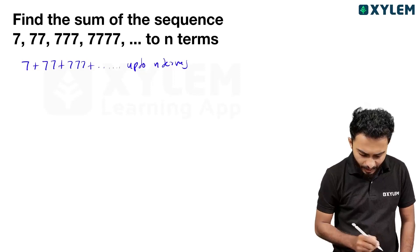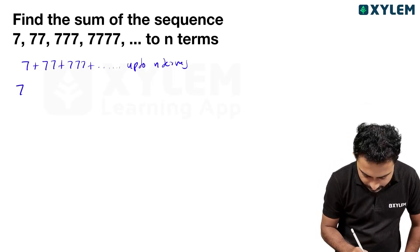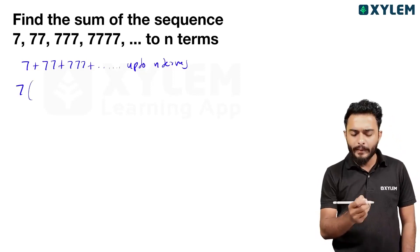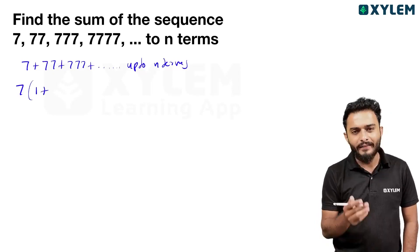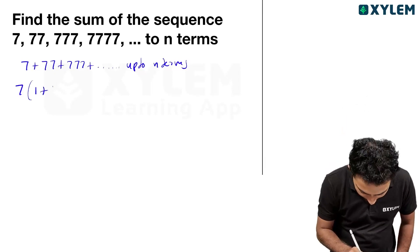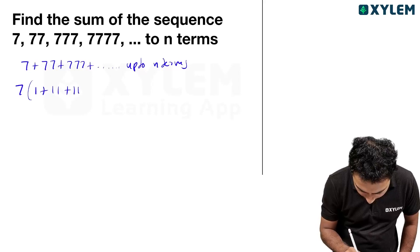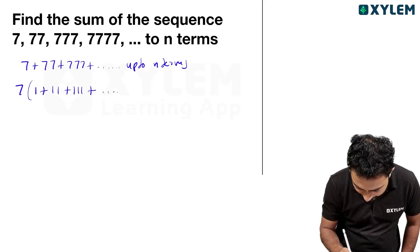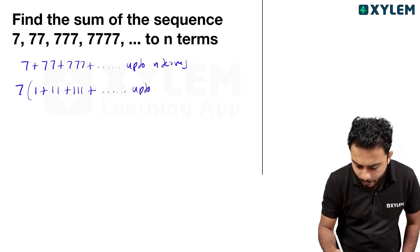So we have 7, 77, 777... up to n terms. We can also write this as 7 is 7, 77 is 7×11, and so on — up to n terms.